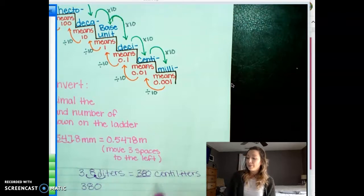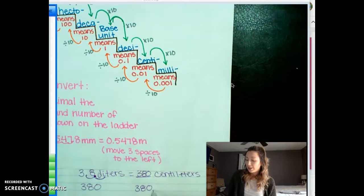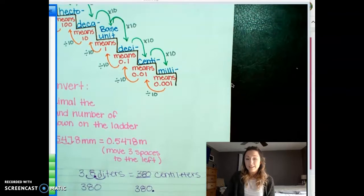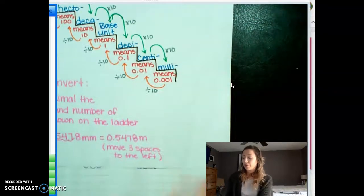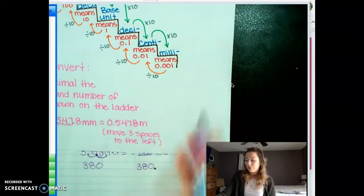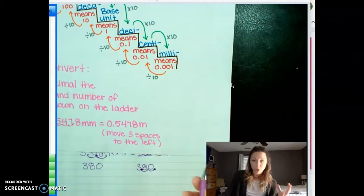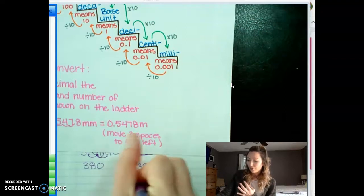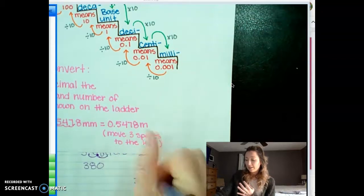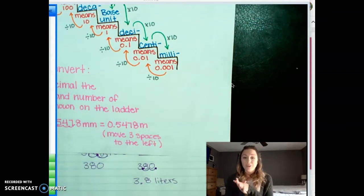Going the opposite way: if we have 380 centiliters and want to convert to liters, remember the decimal is always behind the last digit in a whole number. Moving up two steps from centi to liter means dividing — move the decimal two places to the left — and you get 3.8 liters.